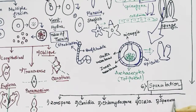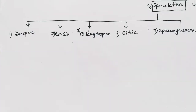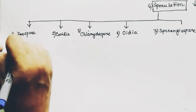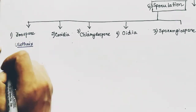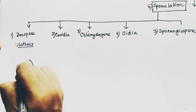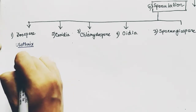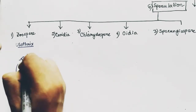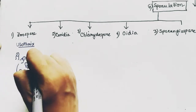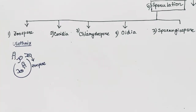The fifth spore type is sporangiospore. Zoospores are spores which have flagella and are motile — they can move with their flagella. An example of a zoospore is found in Ulothrix.